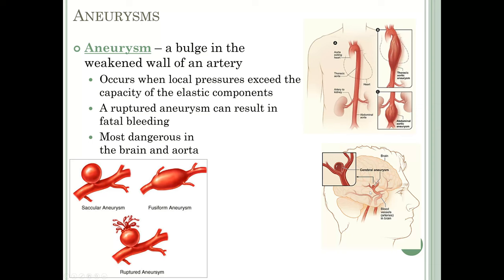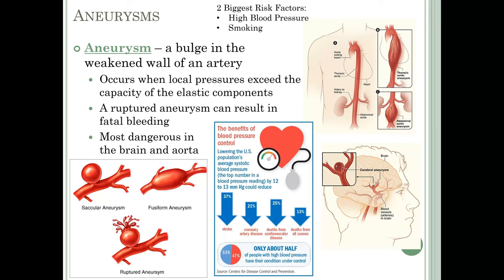Cerebral aneurysms can lead to anything from a mild to a major stroke depending on which artery is affected. The two biggest risk factors for aneurysms are high blood pressure and smoking. It's estimated that only about half of people with high blood pressure have their condition under control. Just lowering your blood pressure by 10 to 13 millimeters of mercury can reduce your risk for stroke, coronary artery disease, deaths from cardiovascular disease, and aneurysms.